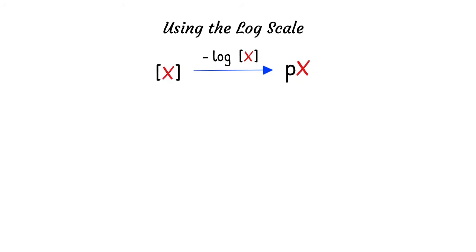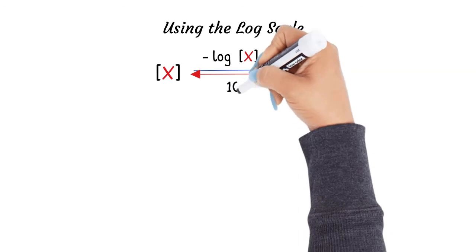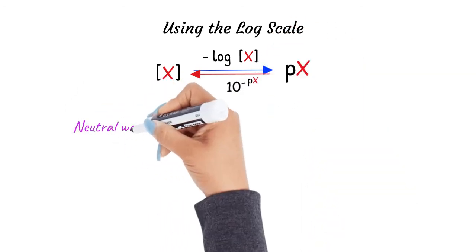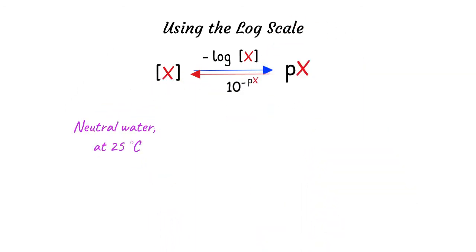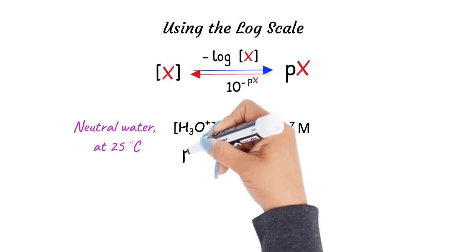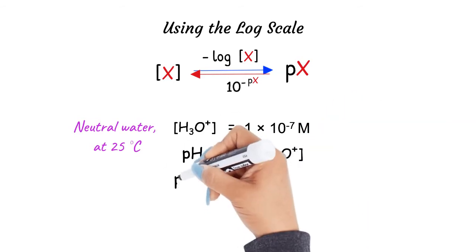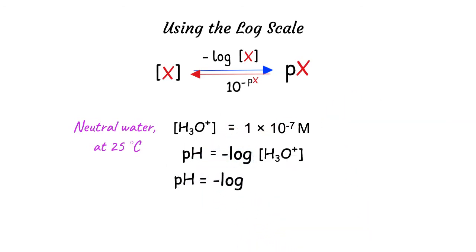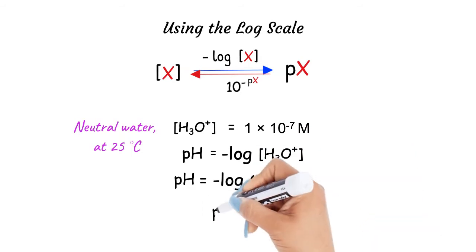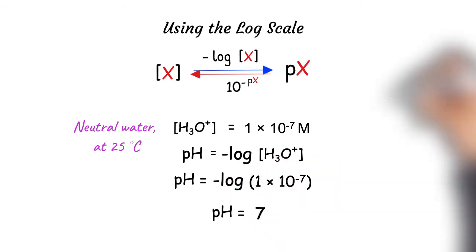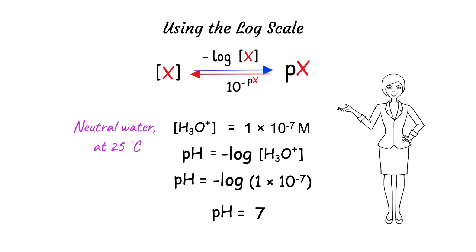Note that the inverse mathematical operation, or the antilog value of negative pX, gives the concentration of X. For pure water at 25°C, the H3O⁺ concentration is 1×10⁻⁷ M. Therefore the pH equals the negative log of the hydronium concentration, which is the negative log of 1×10⁻⁷, giving a pH equal to 7. Now let's look at the relationship of pH, pOH, and pKw.